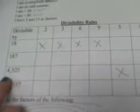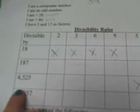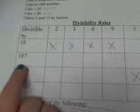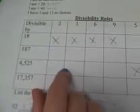And 18 is divisible by 9. Then 187 is not divisible by anything. Why isn't 187 divisible by 3? Because if you add those digits — 1 plus 8 plus 7 — 16 is not divisible by 3.